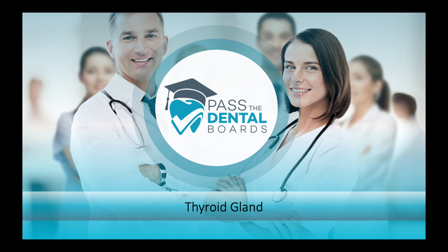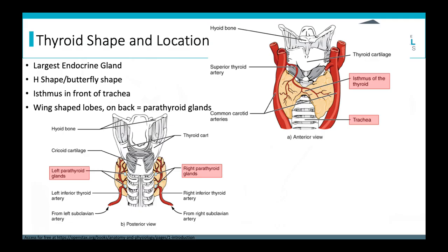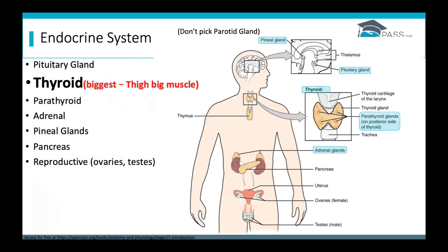In this lecture we will focus on the anatomy of the thyroid gland. First we'll look at the shape and location. The thyroid is the largest endocrine gland — remember that based on the thigh being a big muscle, so the thyroid is a really big endocrine gland. In fact it's the biggest.